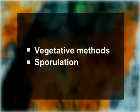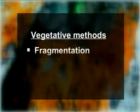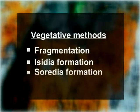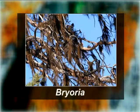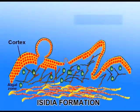Lichens reproduce both by asexual and sexual methods. Asexually, they reproduce by vegetative methods and sporulation. Vegetative methods of asexual reproduction include fragmentation, isidia formation, and soredia formation. In fragmentation, the thallus breaks into small segments, each of which develops into a new thallus under favorable conditions. This is a major method of reproduction in fruticose lichens — for example, species of Bryoria.